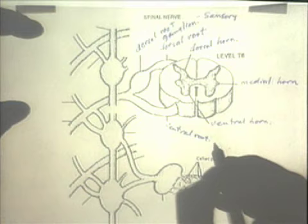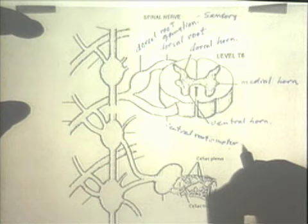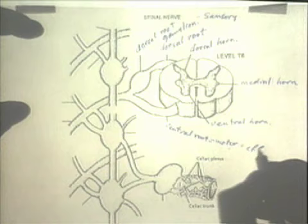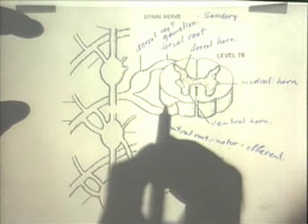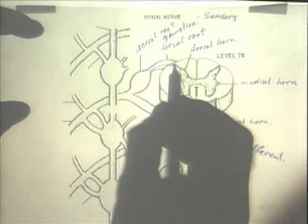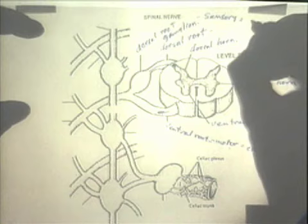The ventral root is motor. And it is also referred to as efferent, meaning leaving the central nervous system. If something is moving toward the central nervous system, as in the dorsal root, we call that afferent. So: sensory or afferent.